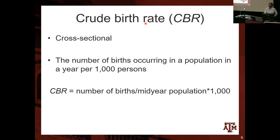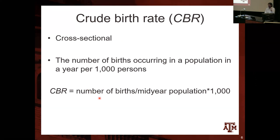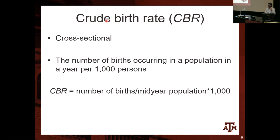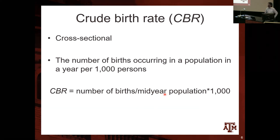The crude birth rate is called a birth rate — not a fertility rate — because the numerator includes both male and female births while the denominator includes both men and women in the total population. It's called 'crude' because we're just getting the overall number of babies born divided by the total population without accounting for the age of the parents. Because the denominator includes males and females, it's a birth rate rather than a fertility rate.